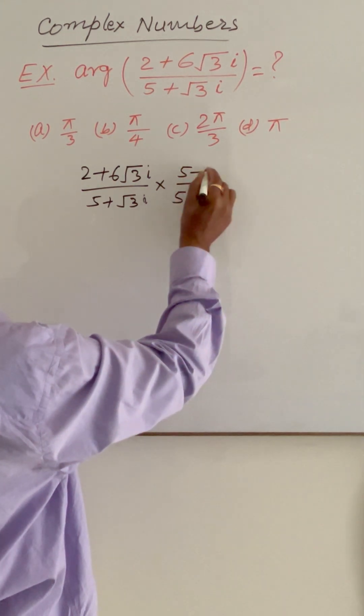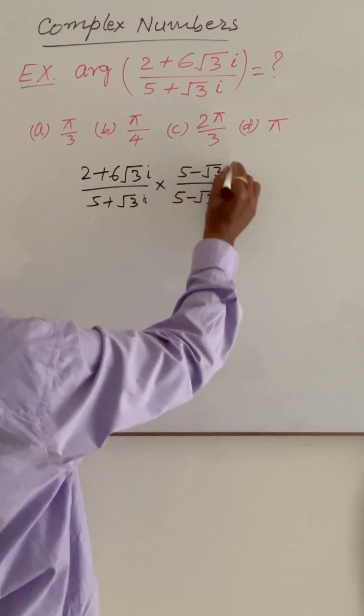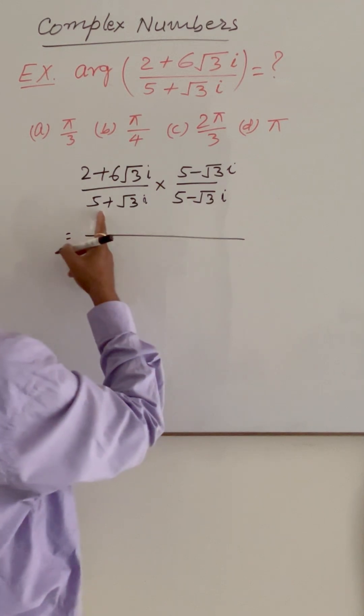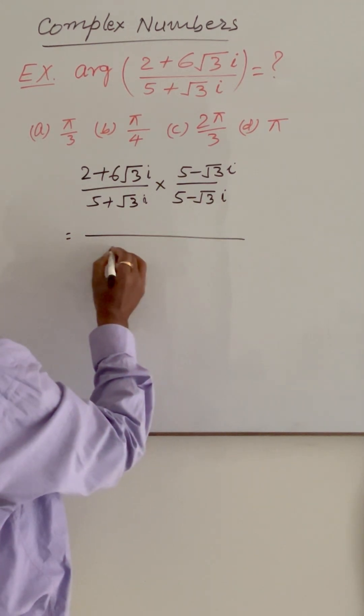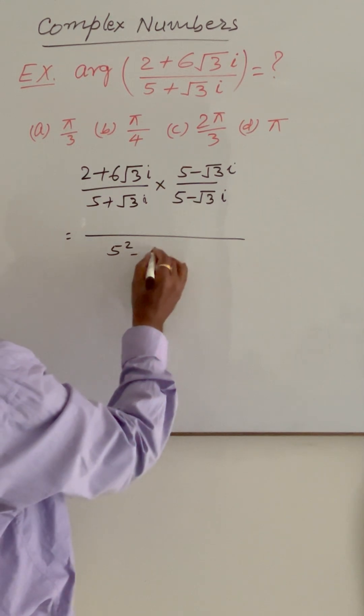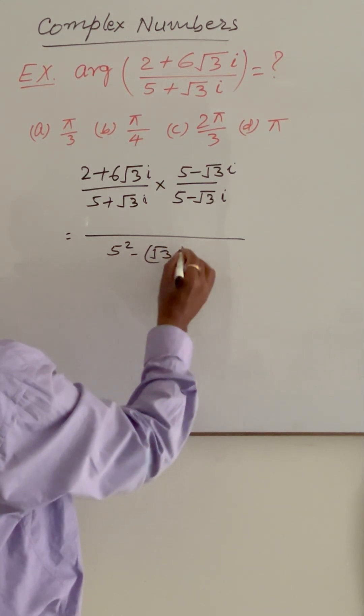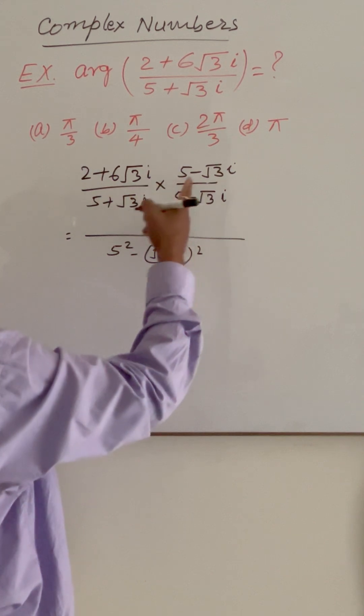So here 5 minus root 3i. Now let us simplify it. The denominator is in the form of a plus b into a minus b, so a square minus b square. And we will multiply these two factors here.